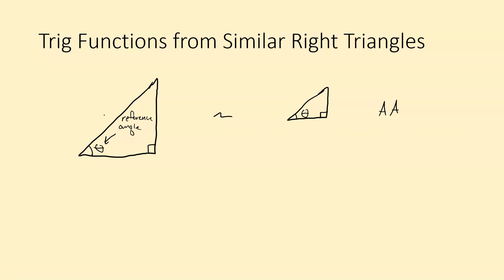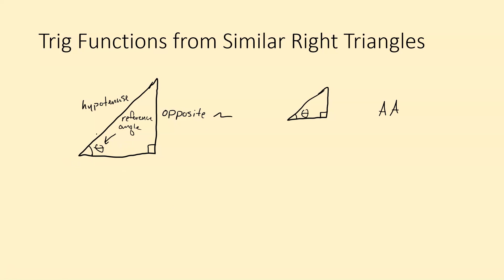The hypotenuse is always going to be the hypotenuse. The side opposite the reference angle is called the opposite side. And the other side touching the reference angle that's not the hypotenuse is called the adjacent side — adjacent meaning it's touching it.